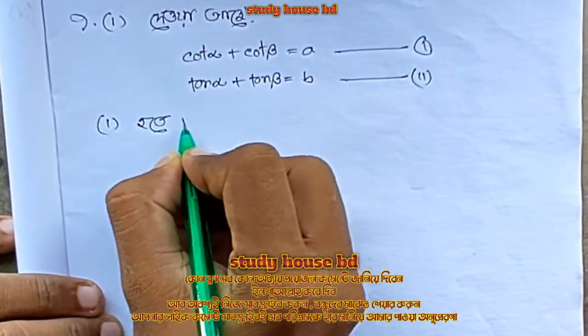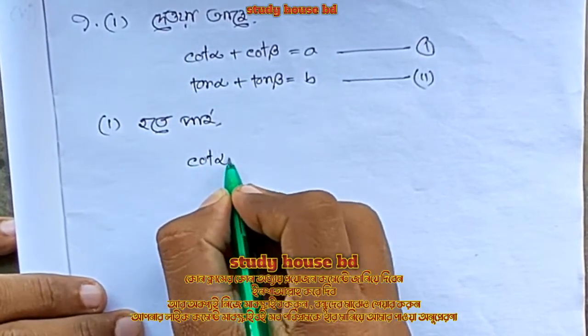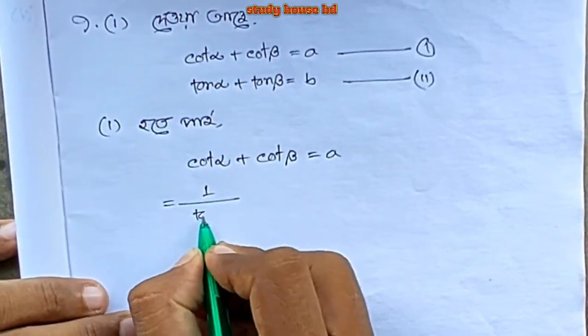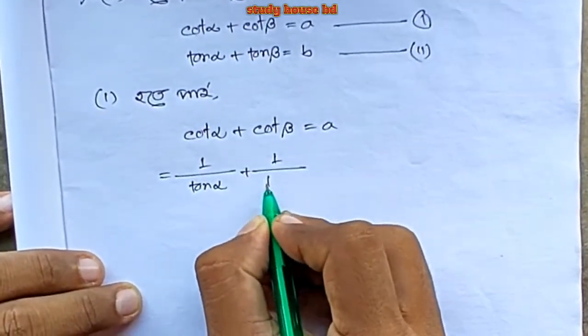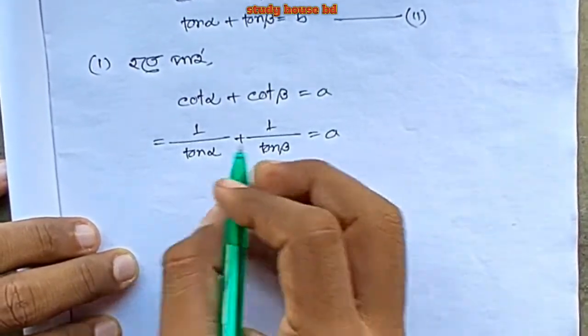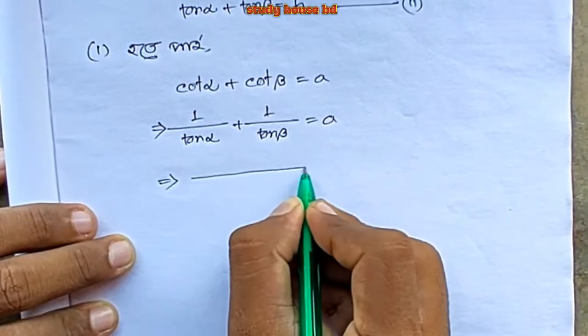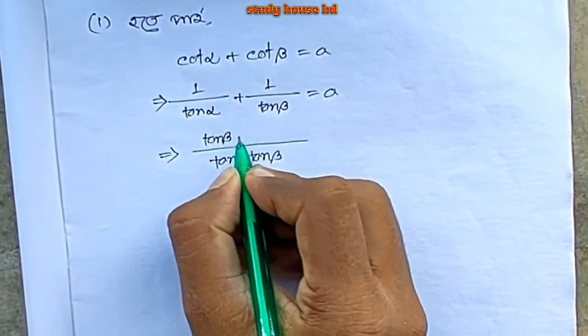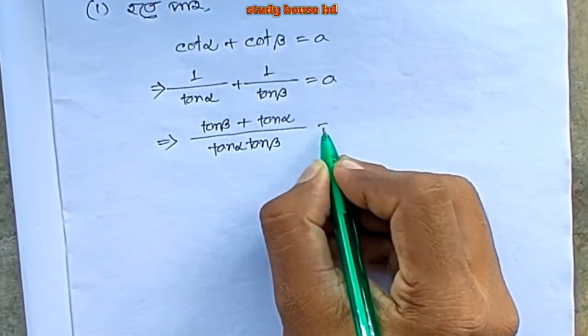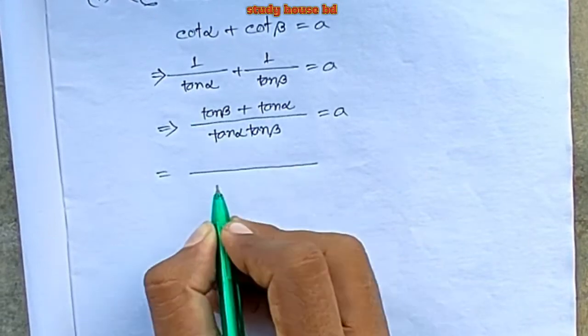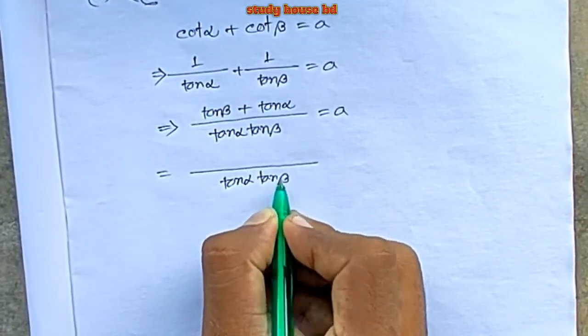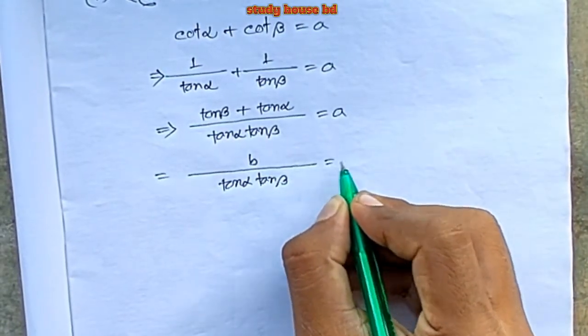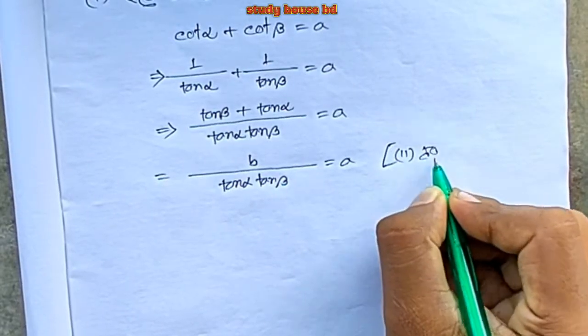So I could write a fine, what alpha plus what we can take. Then alpha plus beta equal to a. Again I have tan alpha then theta, and tan beta. Then alpha, tan alpha, and beta.